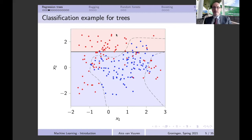Python determined it is best to break the space at x2 = 1.217, creating two subspaces: one for which x2 ≤ 1.217 and another for x2 > 1.217. In the upper subspace, most observations are red, so it is best to make a red prediction. In the lower subspace, most observations are blue, so a blue prediction is best.